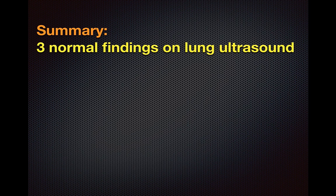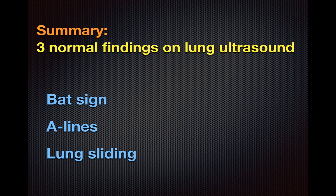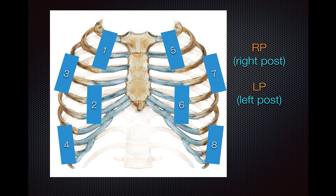In summary, the three normal findings to look for on lung ultrasound are: the bat sign, A-lines, and lung sliding. The expected scan zones are labeled one through eight. For patients who can sit up, also examine the posterior regions. As I teach my trainees: place your transducer on all the areas you would normally auscultate, and label them accordingly — right posterior, left posterior, and so on. That is the end of the module. Thanks for tuning in.